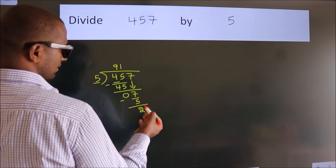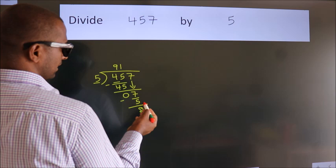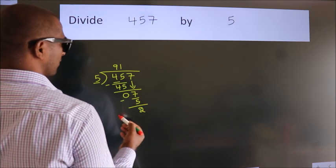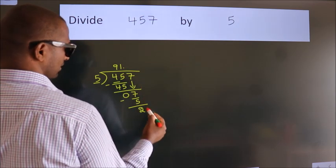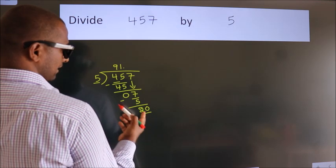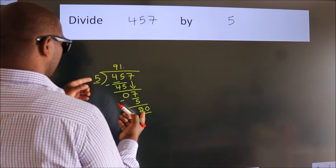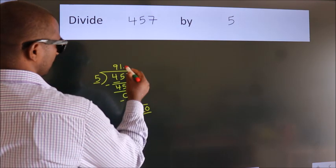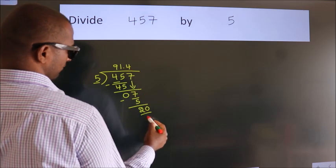After this, no more numbers to bring down. So what we do is, we put a dot, take 0. So 20. When do we get 20 in the 5 table? 5 fours, 20.